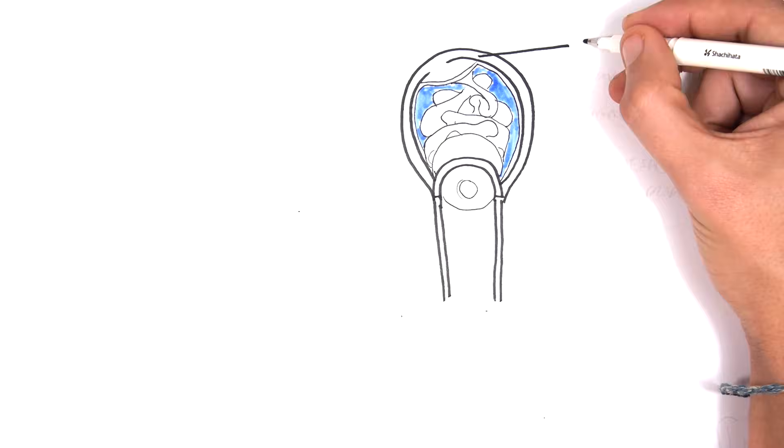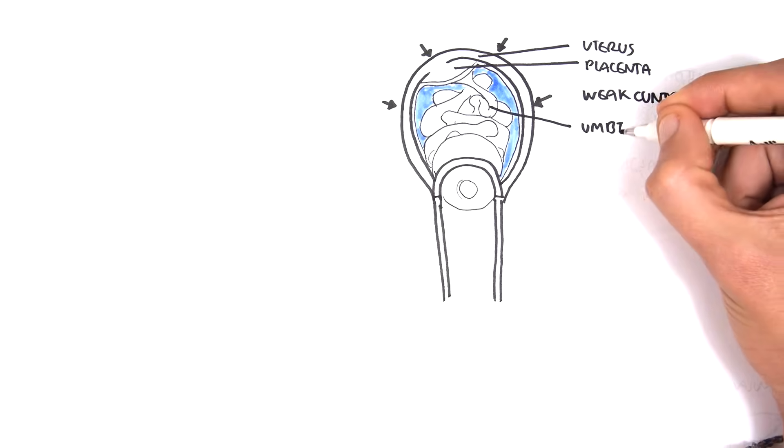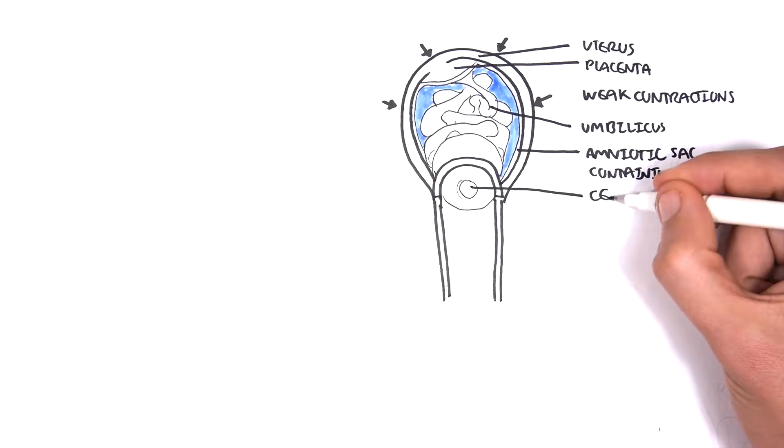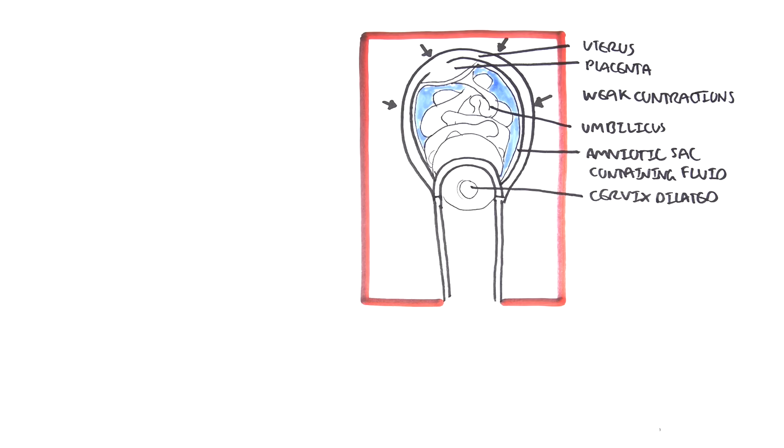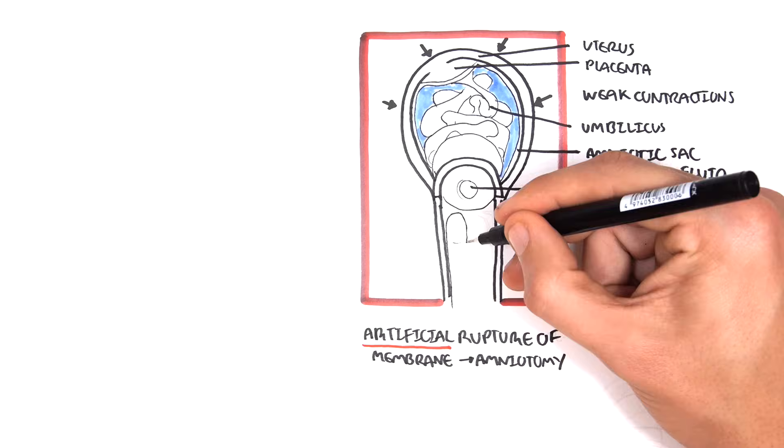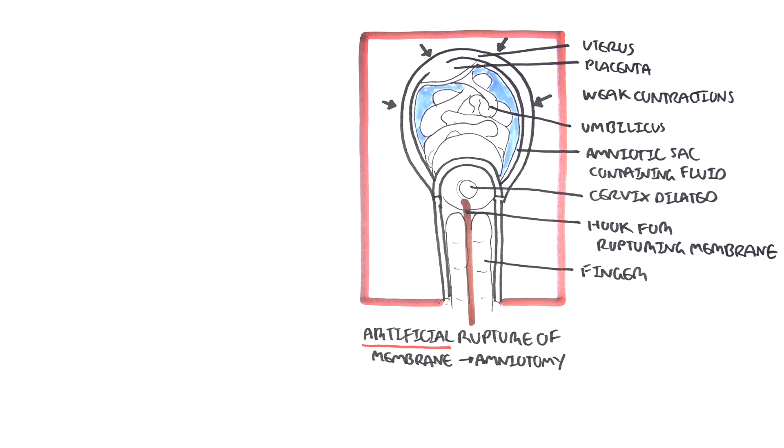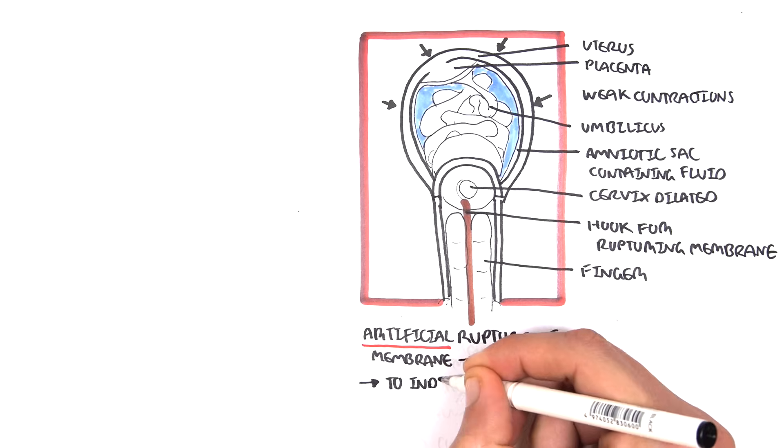Here again is the same diagram. Here is the uterus, the placenta. The uterus is contracting regularly but maybe the uterine contractions are weak and so the amniotic sac is still intact. Here is the amniotic sac containing the amniotic fluid. Here is the cervix which is partially dilated. Artificial rupture of membranes is also known as amniotomy, which is where a doctor or midwife will rupture the amniotic sac with a sort of small hook. And this can induce or it can accelerate labor.